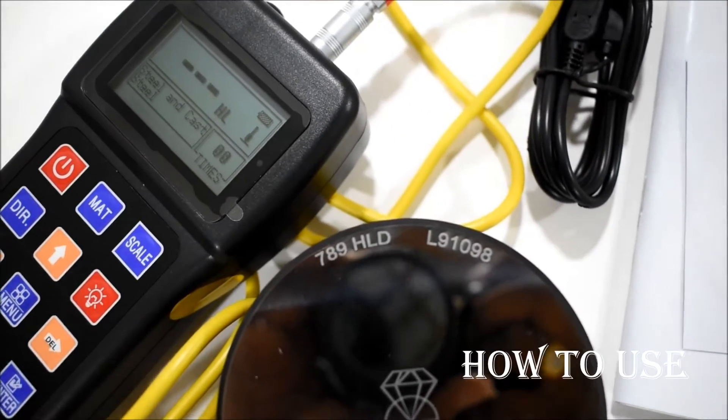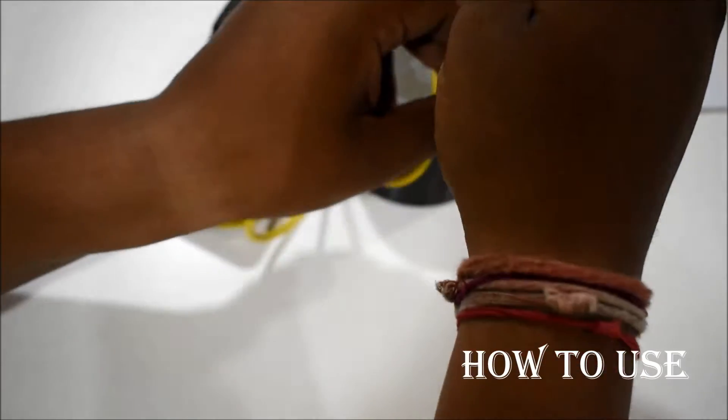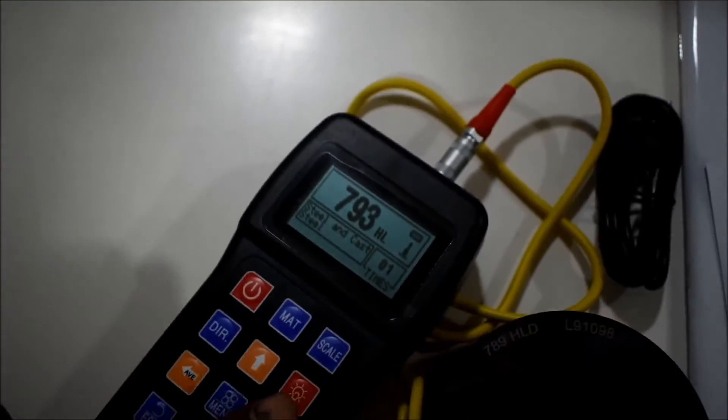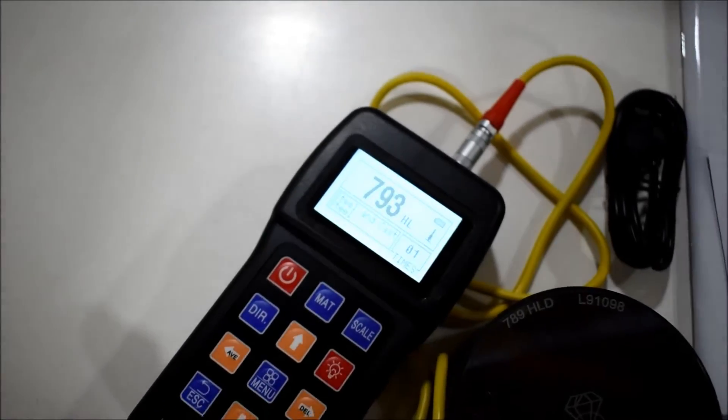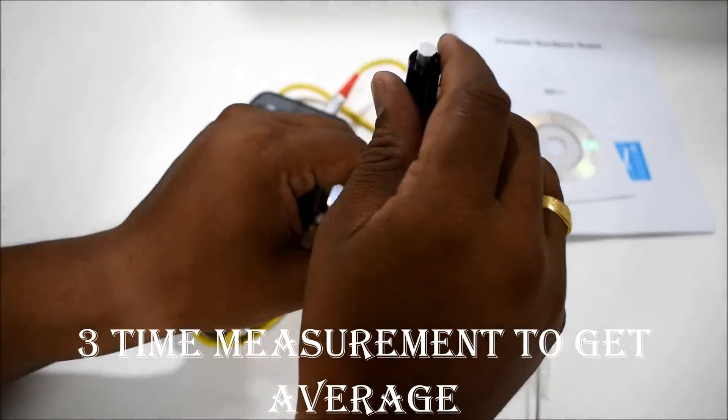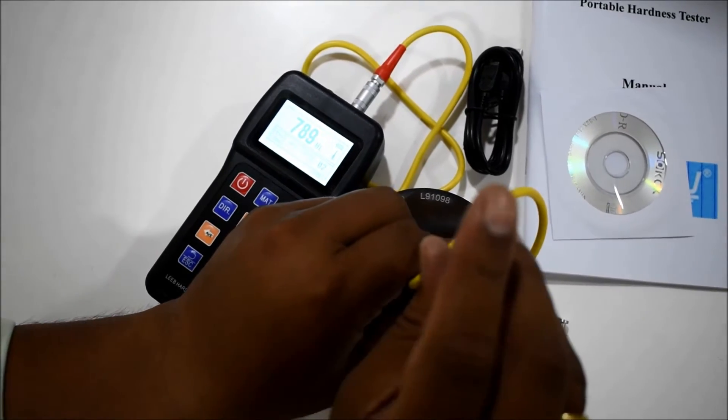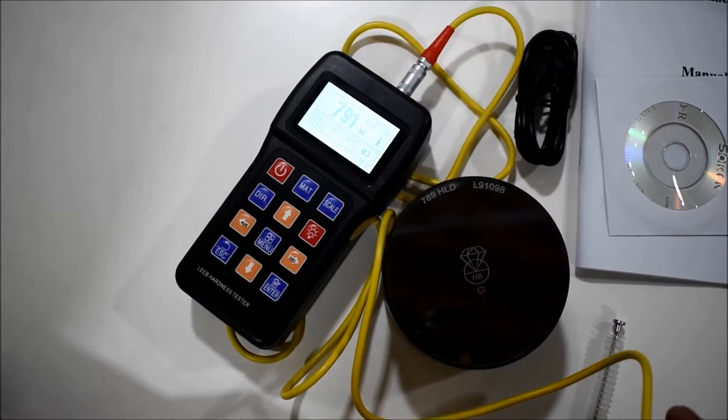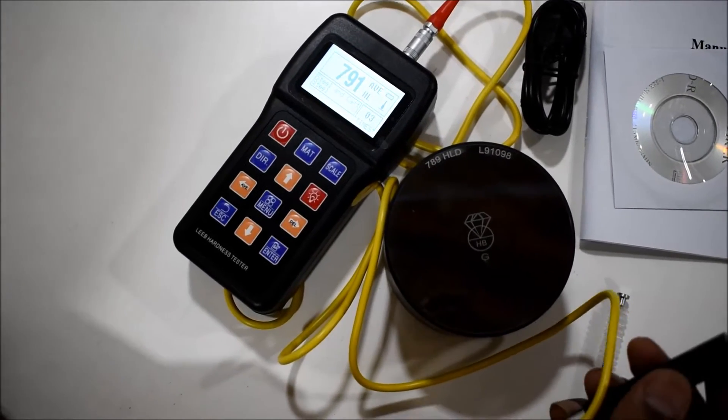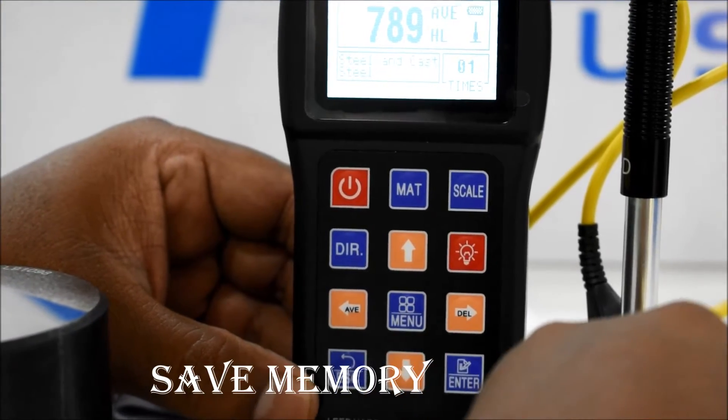We get 789 HLD on the block. Take 3 measurements, then get the average of 791. Use the save option, then we will go to check the saved memory.